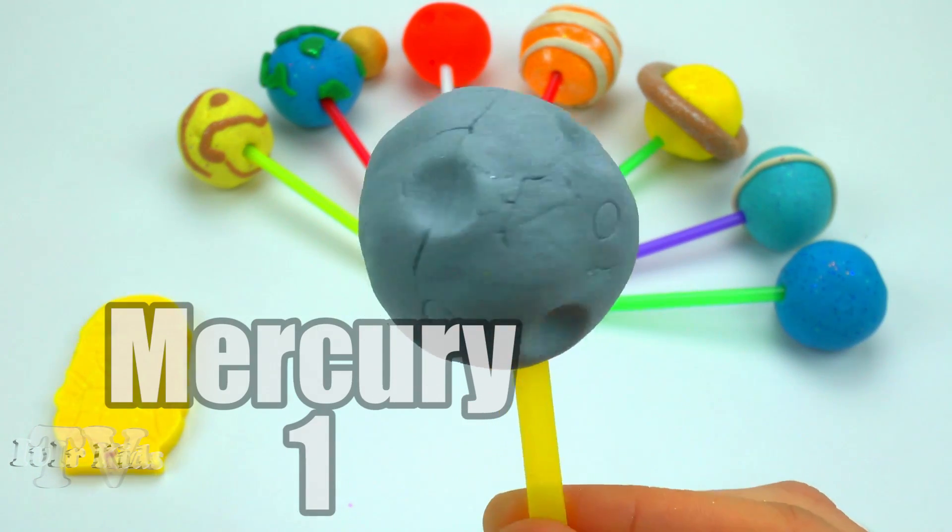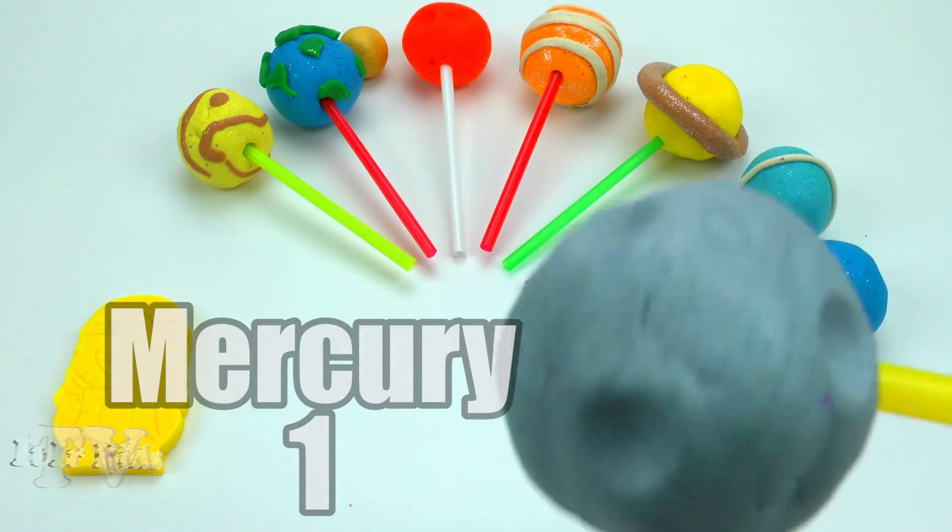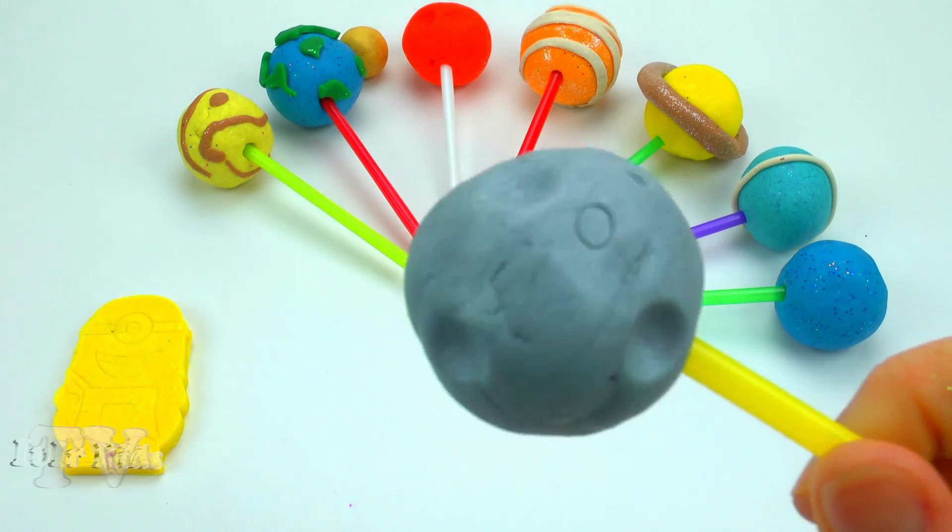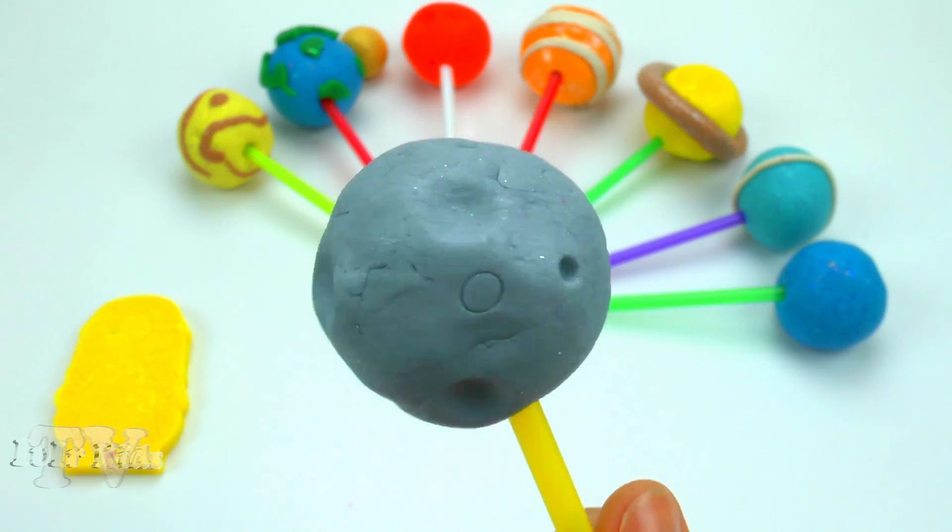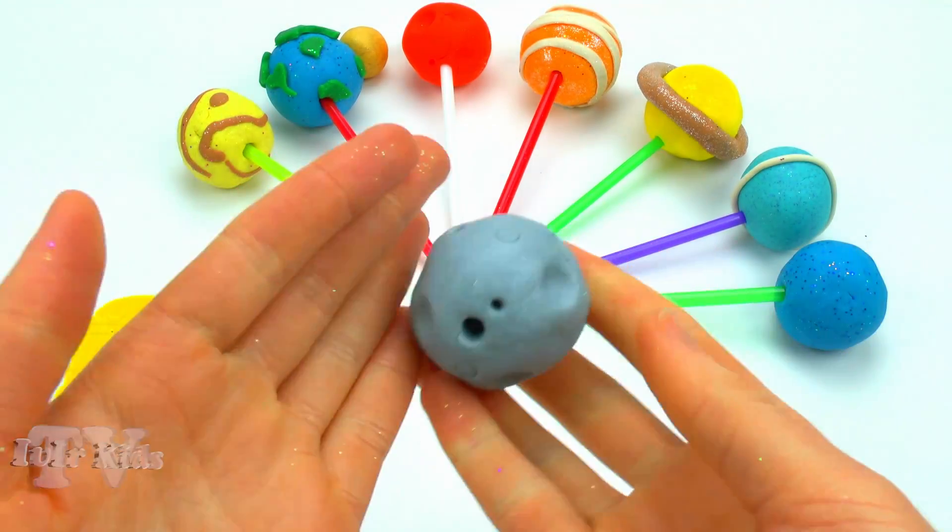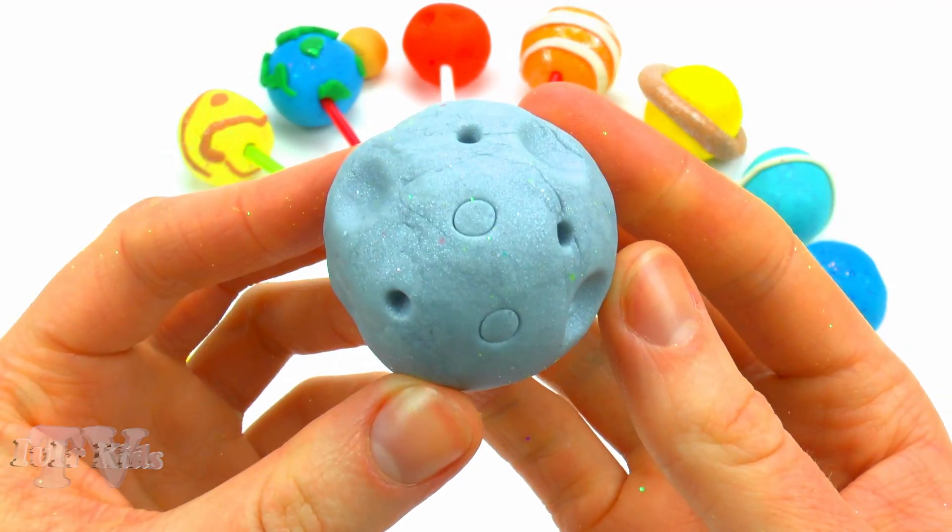Mercury. Mercury is the planet of the solar system closest to the Sun. The planet is named after the ancient Roman god of trade, fast Mercury, as it moves faster than other planets.